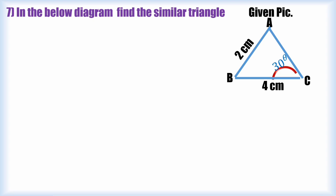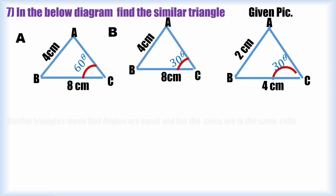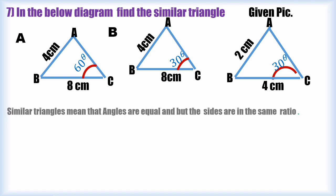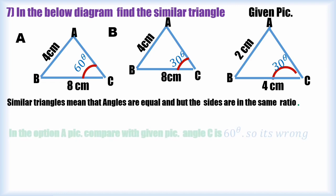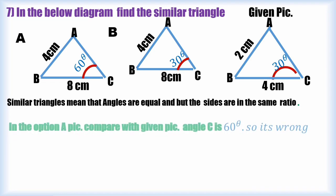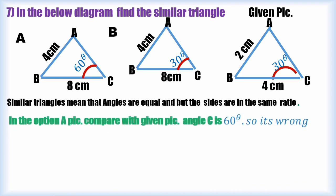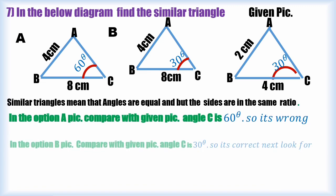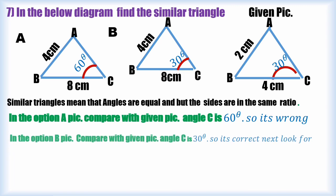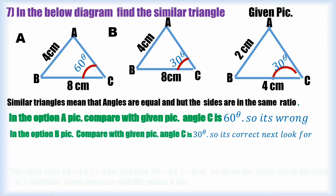Given picture is triangle ABC, whereas angle C is 30 degrees and then side length of AB is 2 cm and side length of BC is 4 cm. Similar triangles means angles are equal and the sides are in the same ratio. I have to compare each option with the given diagram.